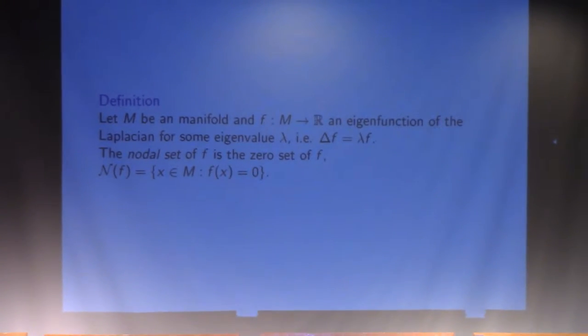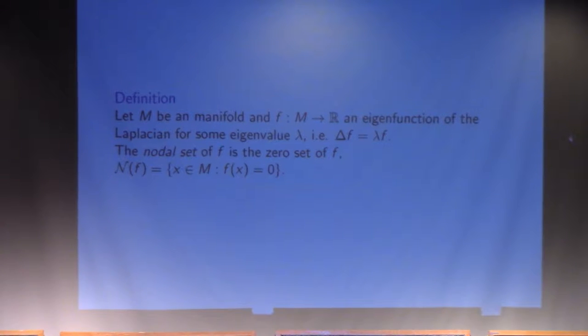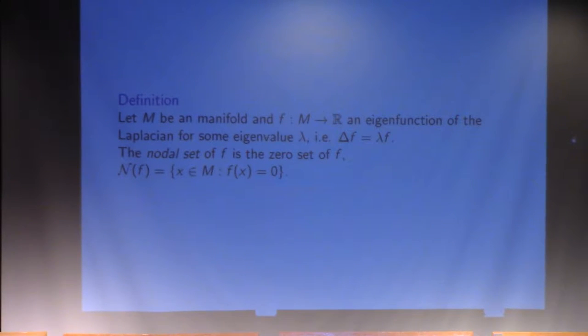We're working on a manifold, so think of like a smooth surface and possibly higher dimensions. We can look at the eigenfunctions of the Laplacian on this manifold, and given some eigenfunction, we can define the nodal set as the set of points on the manifold where the eigenfunction equals zero.